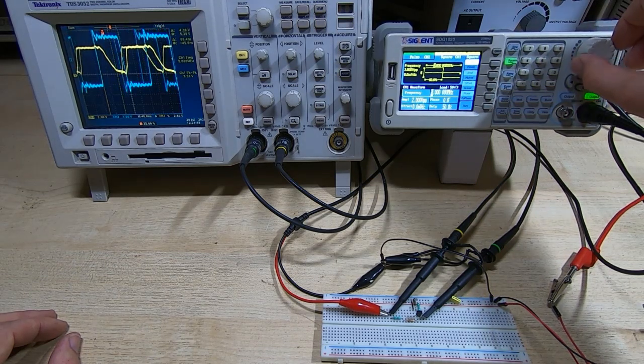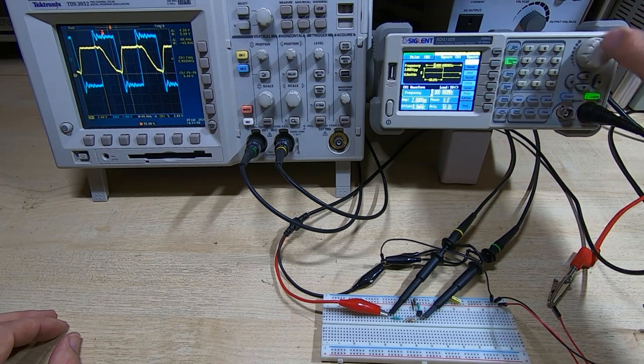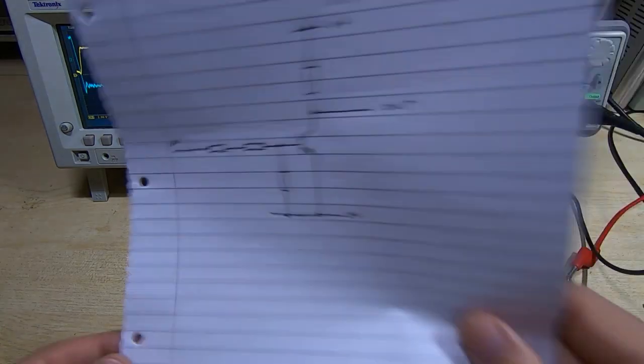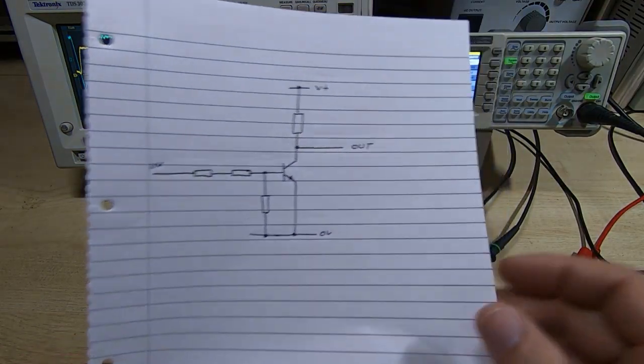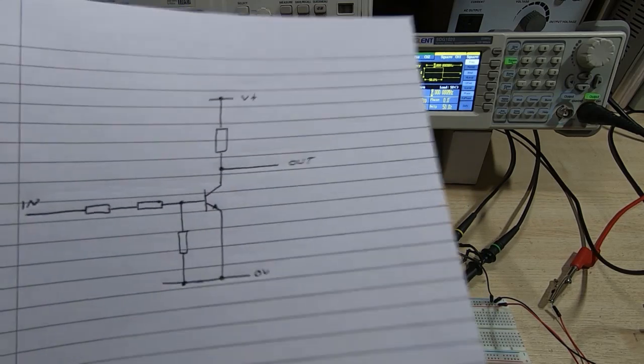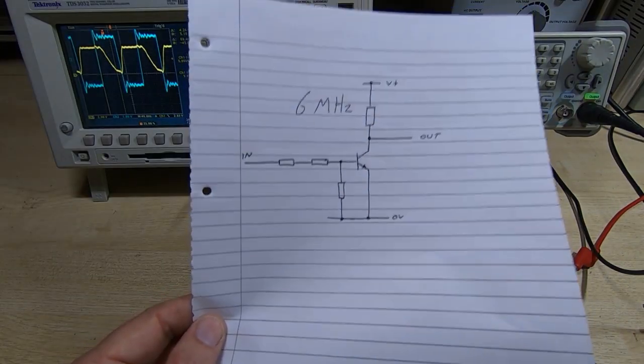So now we're not getting proper switching of the output at all. We can kind of say that the maximum speed we can go to in this mode is probably - we'll be generous and say six megahertz.